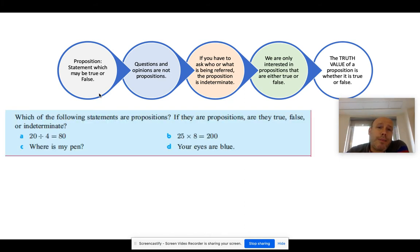Which of the following statements are propositions? If they are propositions, are they true, false, or indeterminate? 20 divided by 4 equals 80. This is a proposition, but it's false.